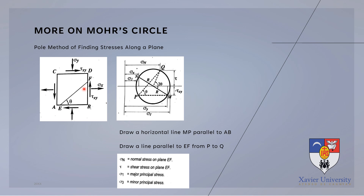For the pole method of finding stress on a plane — in this case plane EF — we first plot points N and M using the given stresses from the problem. Then we draw a line MP parallel to AB. From that, we draw a line parallel to EF, arriving at point Q, whose ordinate and abscissa give the normal stress and shear stress on plane EF respectively.